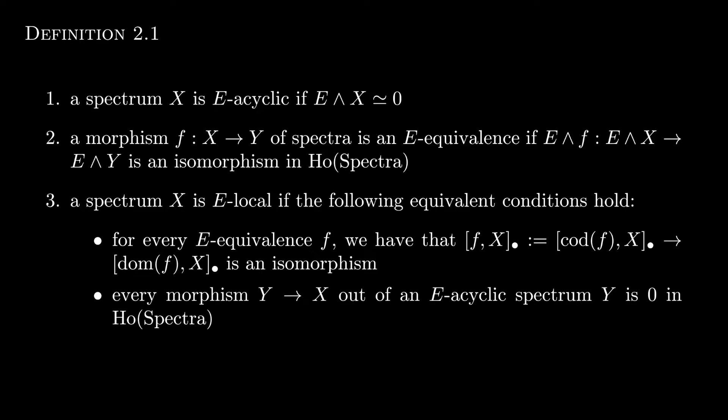Finally, a spectrum X is E-local if the following two equivalent conditions hold. We will actually prove that they are equivalent in a second. The first condition is that for every E-equivalence f, this induced map on the graded homs is an isomorphism. So it's a map from the nth hom of codomain of f and X to the nth hom of the domain of f and X. By the way, we started from the codomain because of contravariance.